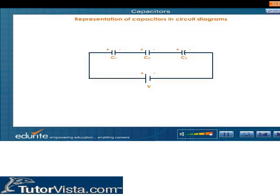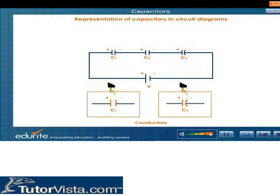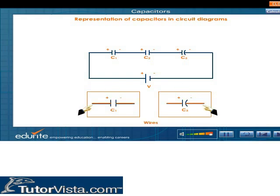Representation of capacitors in circuit diagrams. In circuit diagrams, a capacitor is represented by either of these symbols. In either symbol, the vertical lines — straight or curved — represent the conductors, and the horizontal lines represent wires connected to either conductor.